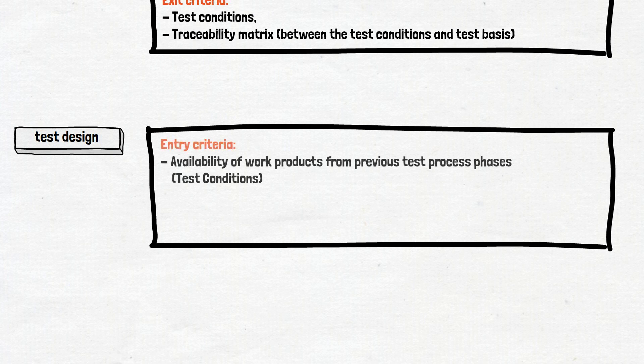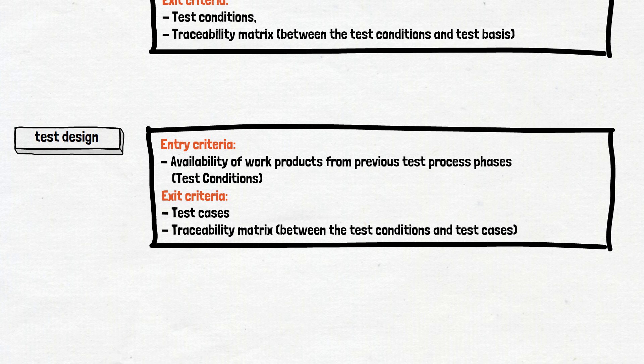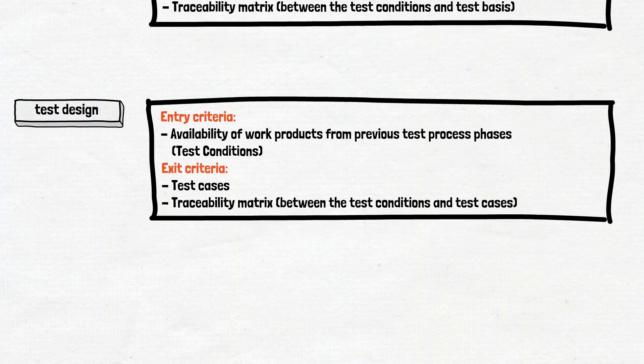As soon as test conditions are determined, you can move on to the next phase — test design. The entry criteria for the test design activity are the availability of test conditions defined in the test analysis activity. Testers write test cases that cover test conditions. As a result, the exit criteria of test design are test cases and the traceability matrix between test cases and test conditions. Thanks to these two traceability matrices, testers are sure that all requirements are covered by the tests.